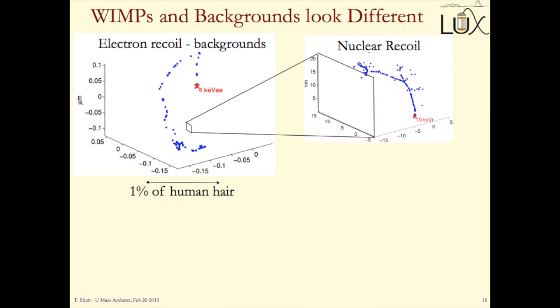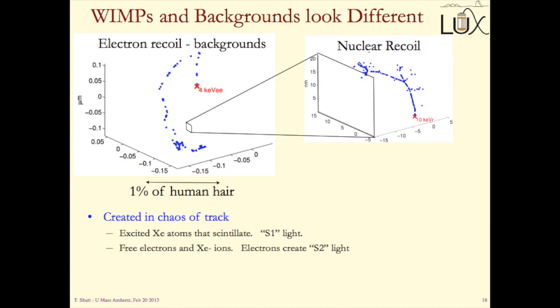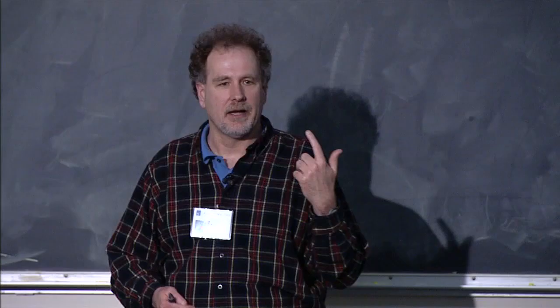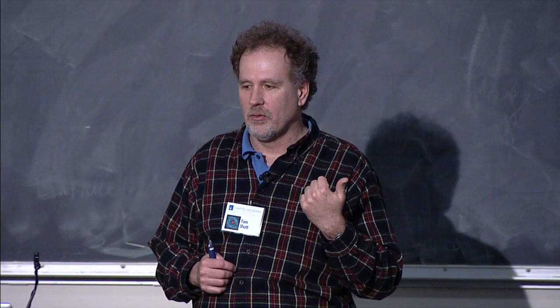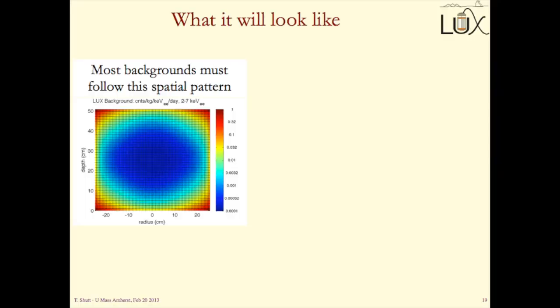What does that do for us? In the chaos created by the track, there are these excited atoms that scintillate — the first flash of light — and they also knock off electrons that come up and give us a second flash of light. Depending on whether you had a really dense track in a tiny little region or this spread-out track, you get more or less of the light versus the electrons. So from the ratio of the two, we can try to tell the difference between electron recoil — gamma ray backgrounds — and the WIMPs. Or possibly neutrons.